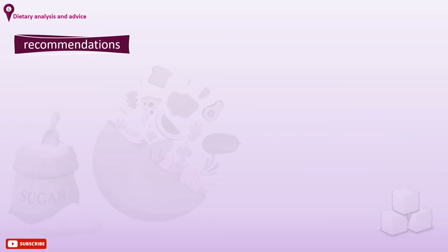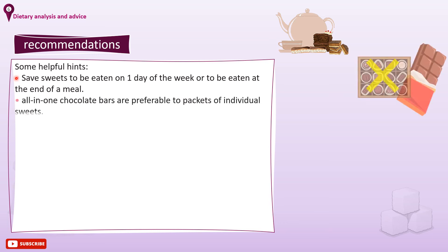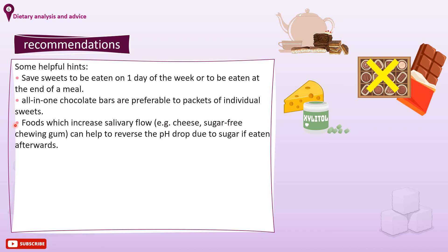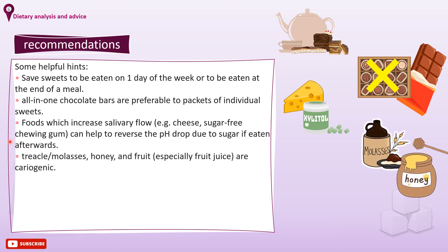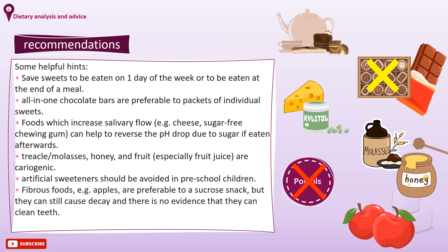Here are some helpful tips to include in recommendations after dietary analysis. These tips must be personalised, tailored, and practical for every individual. Save sweets to be eaten on one day of the week or at the end of a meal only. All-in-one chocolate bars are preferable to packets of individual sweets. Foods which increase salivary flow, like cheese and sugar-free chewing gums, can help reverse the pH drop if eaten afterwards. Treacle, molasses, honey, and fruit — especially fruit juice — are highly cariogenic and must be avoided. Artificial sweeteners should be totally avoided in preschool children, and fibrous foods like apples are preferable to a sucrose snack, but they can still cause decay and there is no evidence that they keep teeth clean.